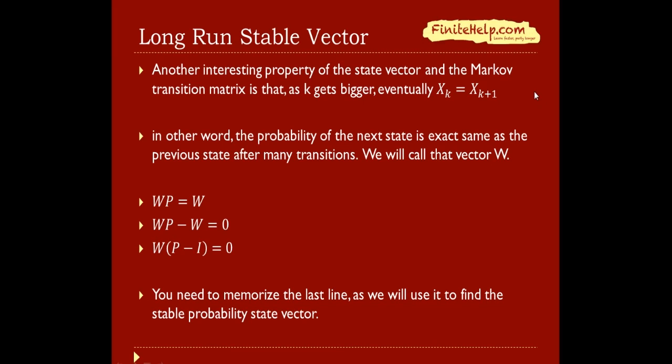The last thing is this thing called the long-run stable vector. Here's yet another interesting property of the state vector. If you transition it many, many times, so here Xk as k gets bigger, eventually you're going to get Xk is the same thing as Xk+1. In other words, the probability of the next state is exactly the same as the previous state after many transitions. We're going to call that vector W.